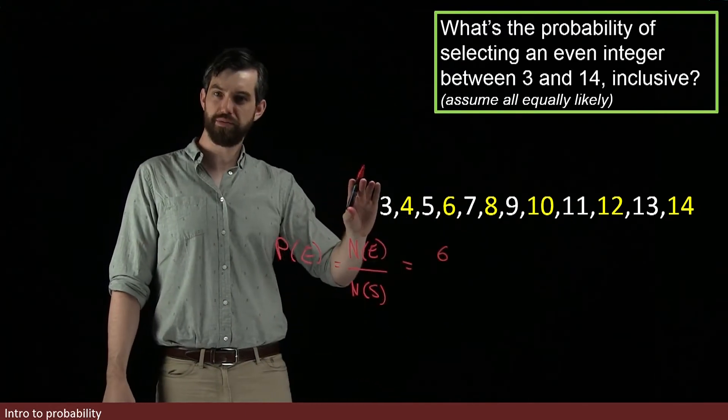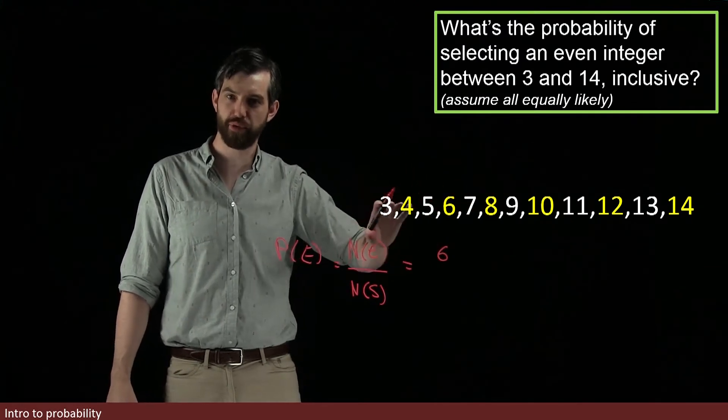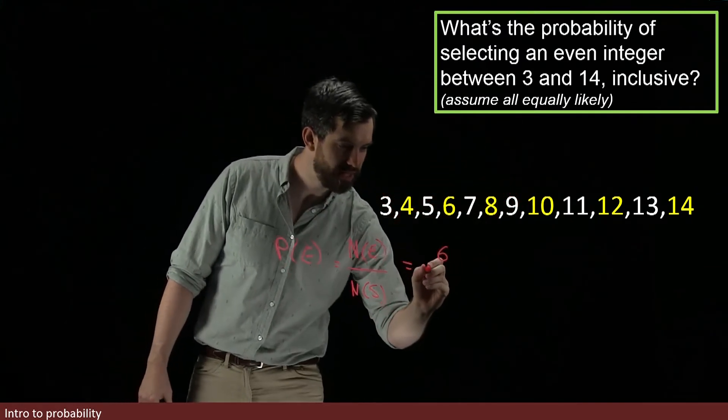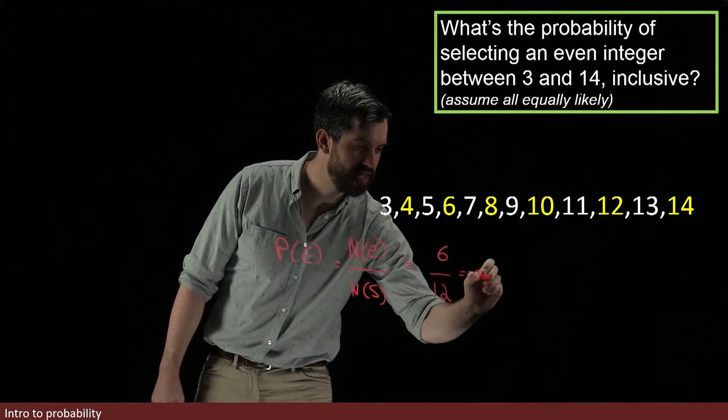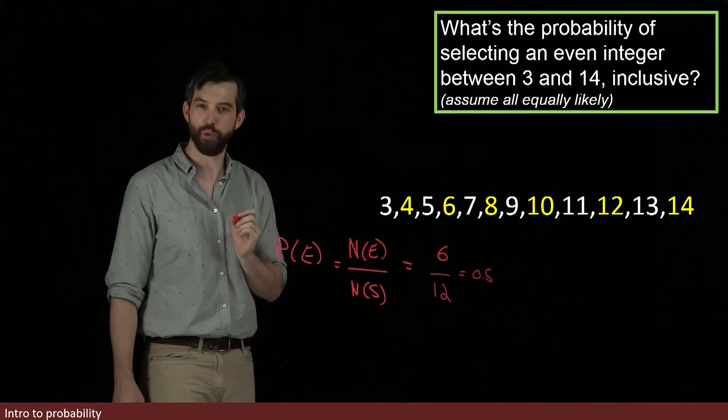And then the total number of things between 3 and 14 is 12. So divide it out by 12 here. In other words, this is going to be 0.5 or 50% as well.